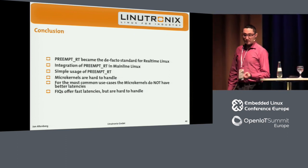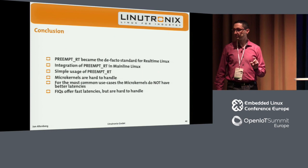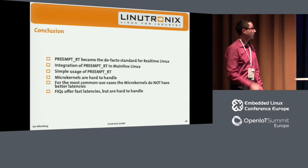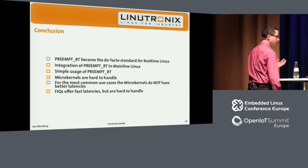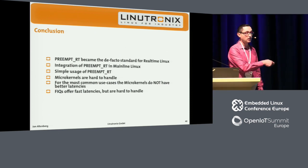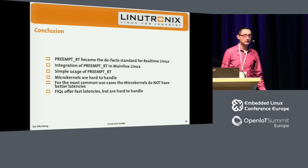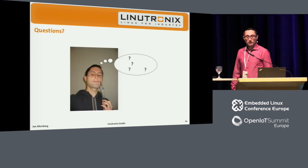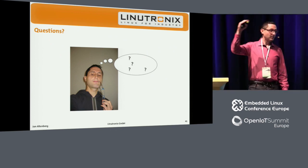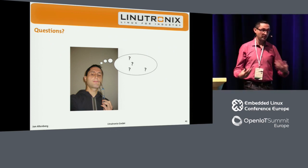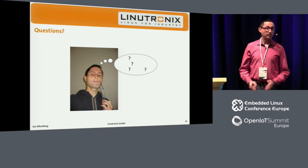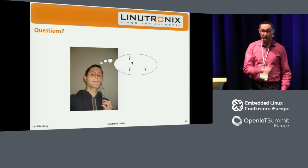Last but not least, if you're willing to accept limitations instead of going with a micro-kernel solution, you could check out what hardware features are available, like FIQs on ARM. We have support for that in Linux, but you need to be aware that what you can do with these hardware features is pretty limited. That was basically all I wanted to tell you about real-time Linux — hopefully a useful high-level overview.